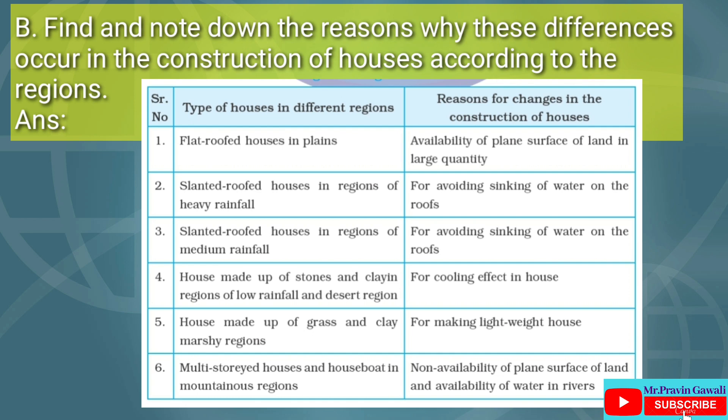First: flat-roofed houses in plains — the reason is availability of plain surface of land in large quantity. Second: slanted roofed houses in regions of heavy rainfall — the reason is to avoid sinking of water on the roofs. Third: slanted roofed houses in regions of medium rainfall — same reason, to avoid sinking of water on the roofs. Fourth: houses made of stone and clay in regions of low rainfall and desert region — the reason is for a cooling effect in the house.